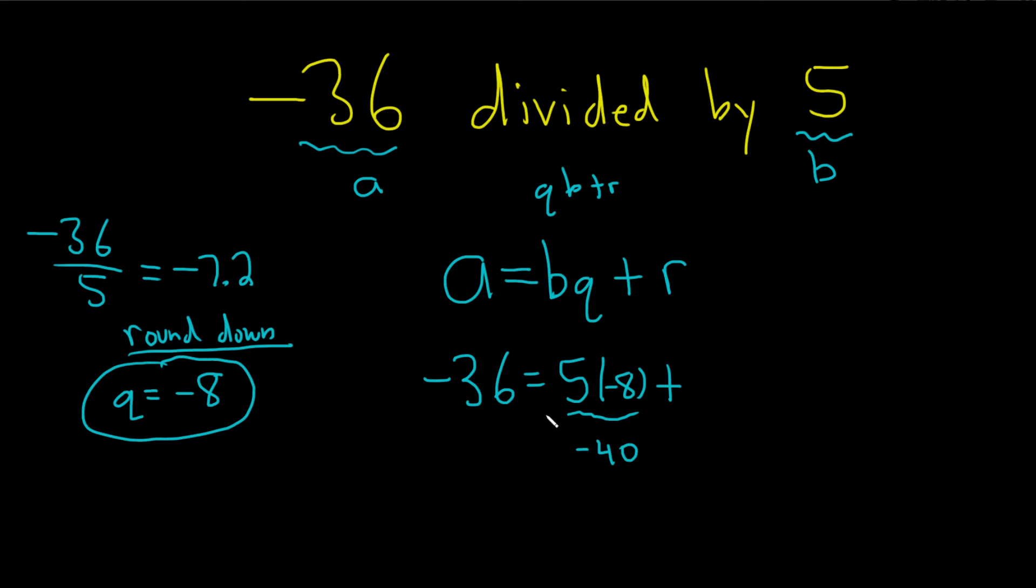But that should be equal to negative 36, right? So what do you add to negative 40 to get negative 36? Well positive 4. And you can check, if you put all of this in your calculator you'll get negative 36. The remainder here is equal to 4.